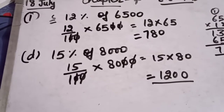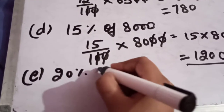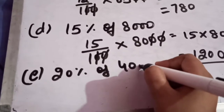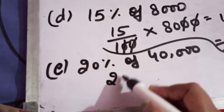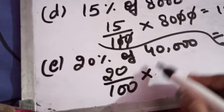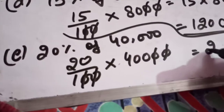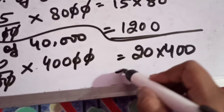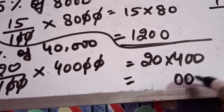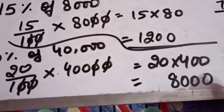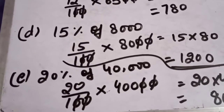Part E: 20% of 40,000. Remove the percentage sign: 20/100 × 40,000. Cancel the zeros, leaving 20 × 400. Both are multiples of 10, so count the zeros — there are four — and multiply 2 × 4 = 8, giving 8,000. So 20% of 40,000 equals 8,000.